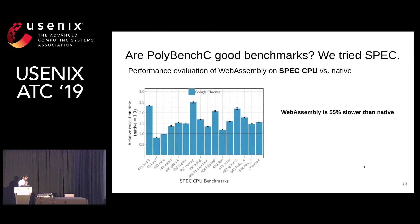But the question is: are those PolyBench C benchmarks really representative of the applications WebAssembly is being used for? We actually tried SPEC benchmarks and found that WebAssembly is 55% slower, instead of 26%.